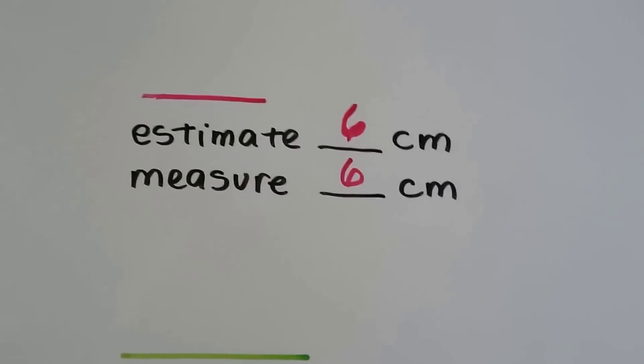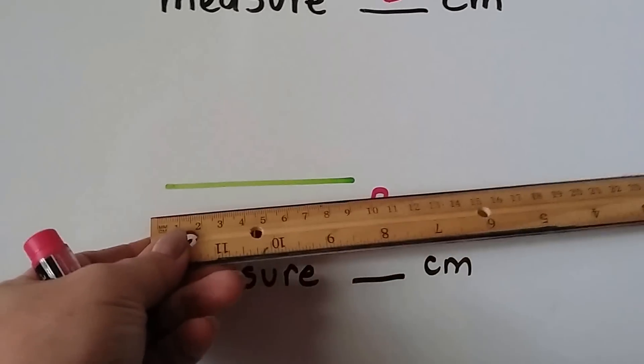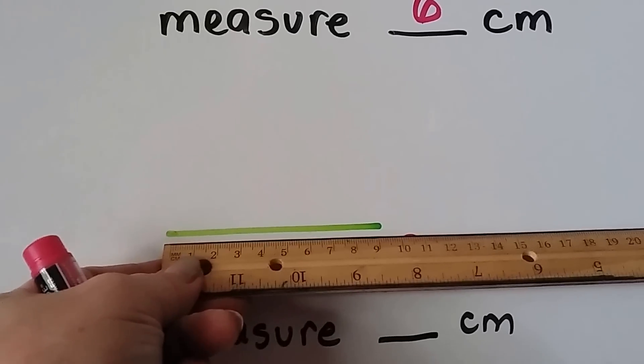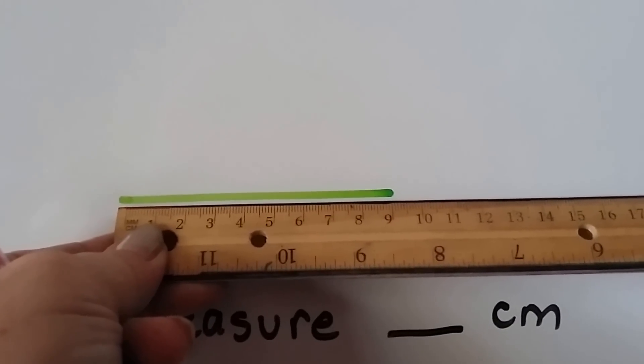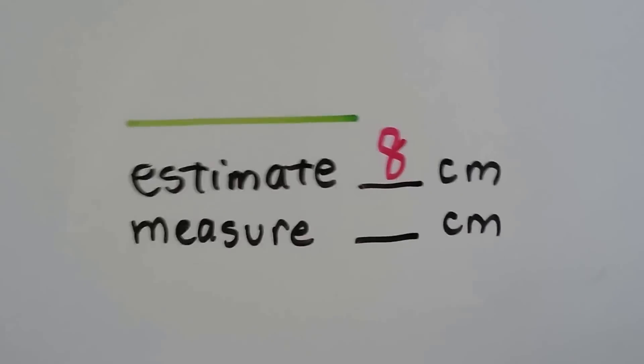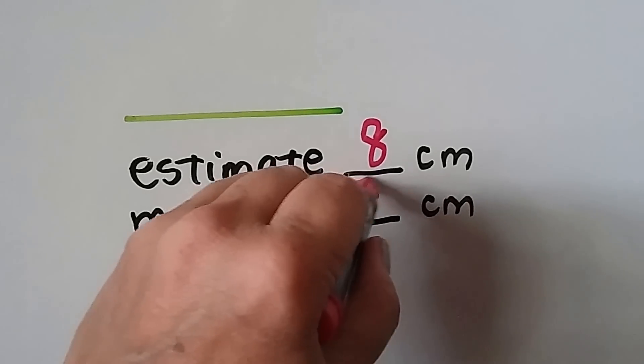And now, let's get our ruler and measure it for real. Let's see where the green line ends. It's nine. The green line ends at the nine there. So its real measure is nine centimeters.